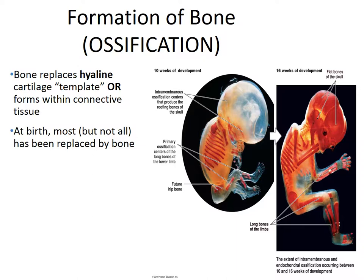The formation of bone is called osteogenesis or ossification and begins during embryonic development. There are two types of osteogenesis that occur in the embryo.